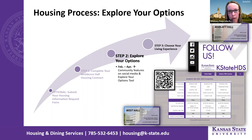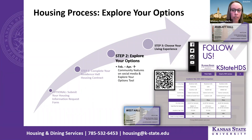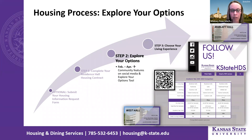We also have an explore your options tool — that's the screen grab shown here with three different hall comparisons. This tool lets you look at either the same residence hall with different room types and meal plans, or several different residence halls comparing costs with meal plans. You can compare up to three different scenarios, do multiple comparisons, and print or email the table. Scan the QR code at the top left to access that tool and start looking through your options. Knowing your options is important going into the room selection process.